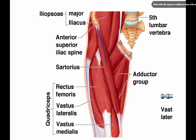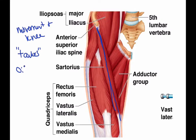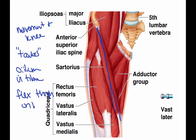Now on the anterior side, next up is the sartorius, right here. It's going to be a movement at the knee. It's a strap-like muscle known as the tailor's muscle. Tailors used this muscle when sitting cross-legged hemming pants — that's what the book talks about. The origin is the ilium, the insertion is the tibia, and it flexes the thigh on the hip.